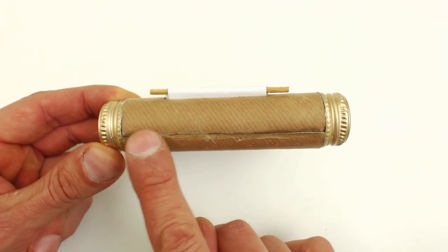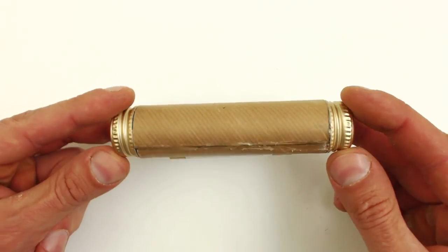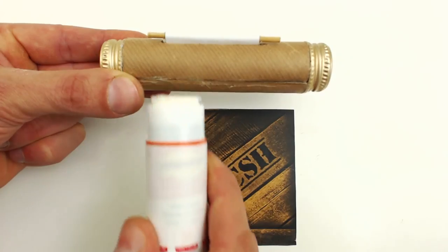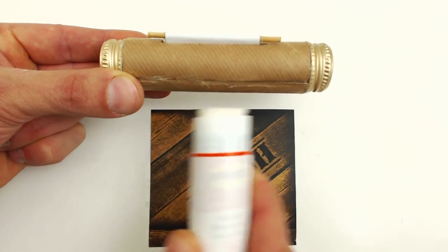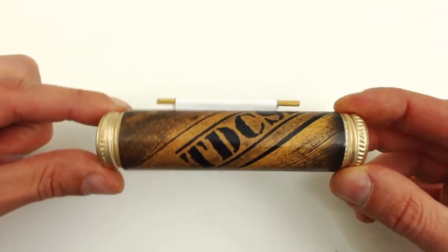The only thing left to do is to decorate it to cover the joins. This step however is optional. We've taken advantage of a cutting that we had and all we've done is stuck it using a glue stick. Now it's completed.